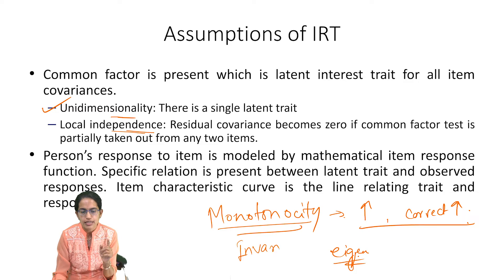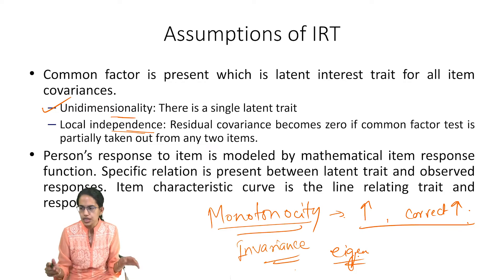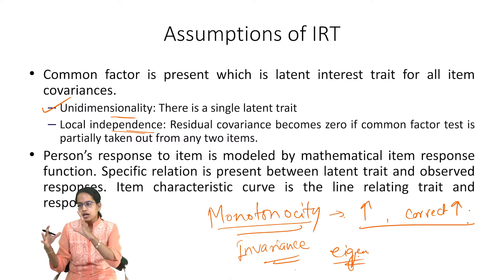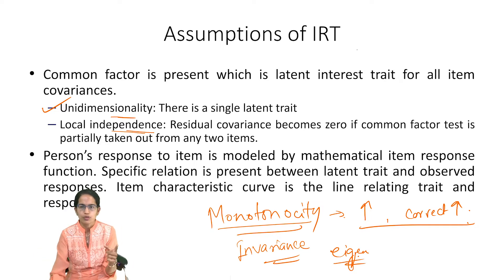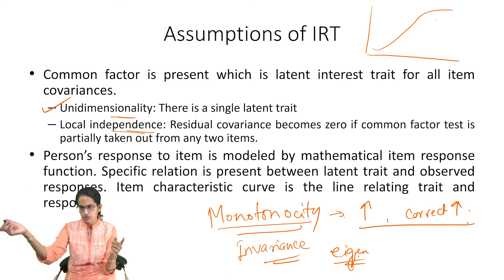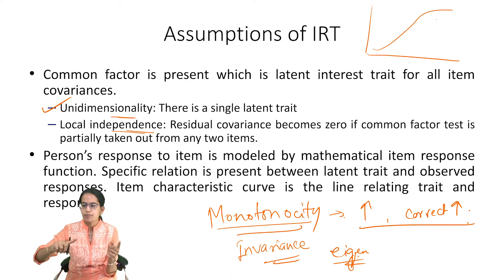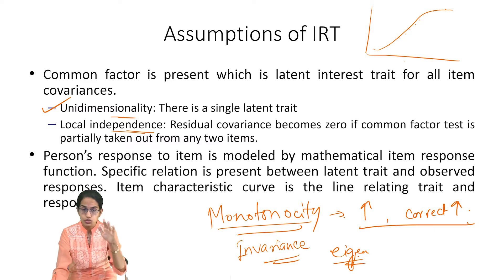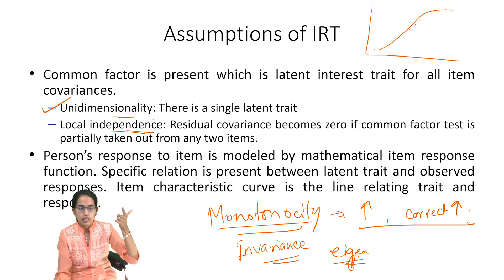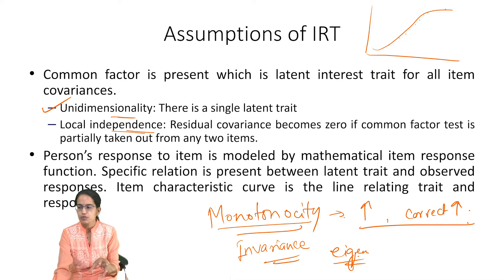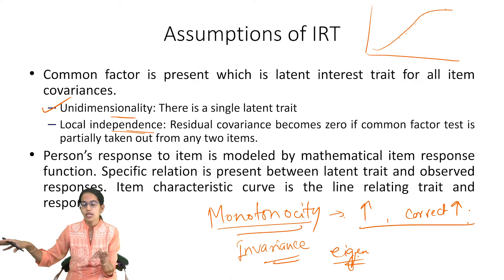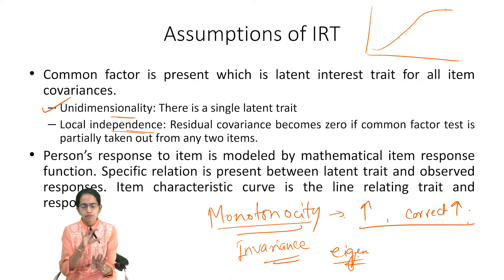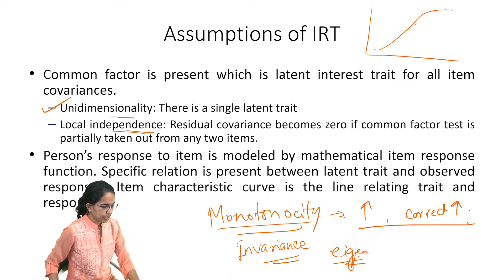The fourth important characteristic is invariance, which means we are allowed to estimate the item parameters from any position on the item response curve. It is a sigmoid S-shaped curve, and we can estimate item parameters from any location on the slope of this curve. If all four assumptions — monotonicity, unidimensionality, local independence, and invariance — hold true, the relationship between observed correct responses and variations in latent trait levels can be properly understood.